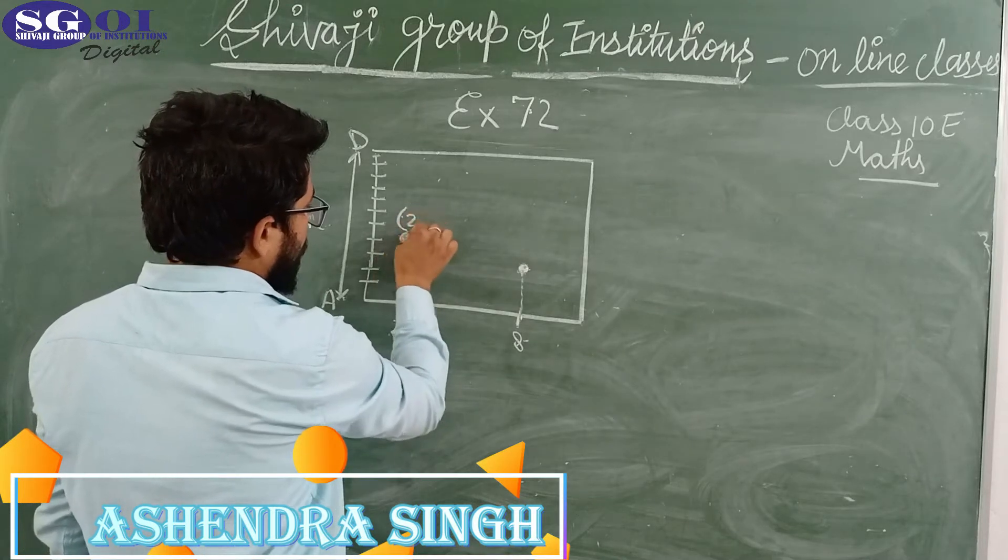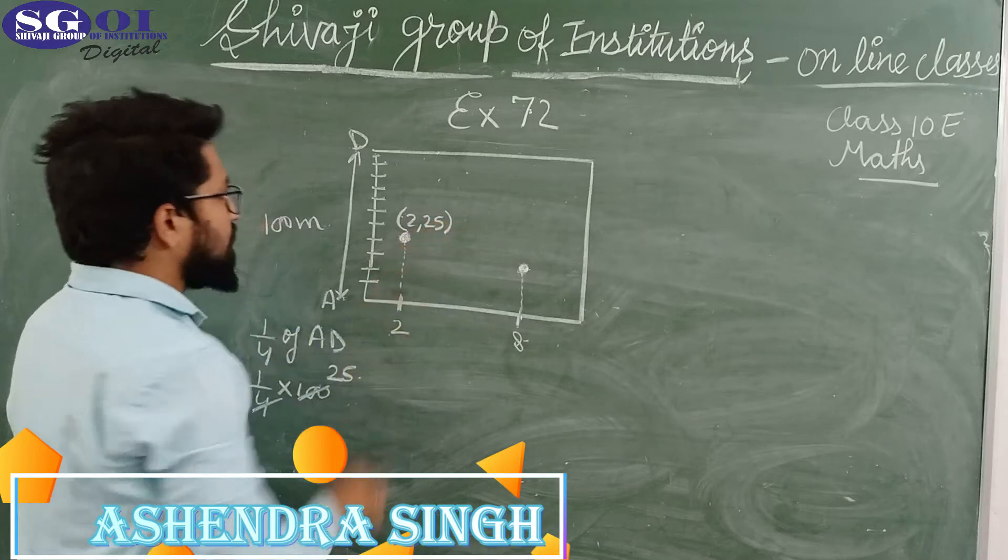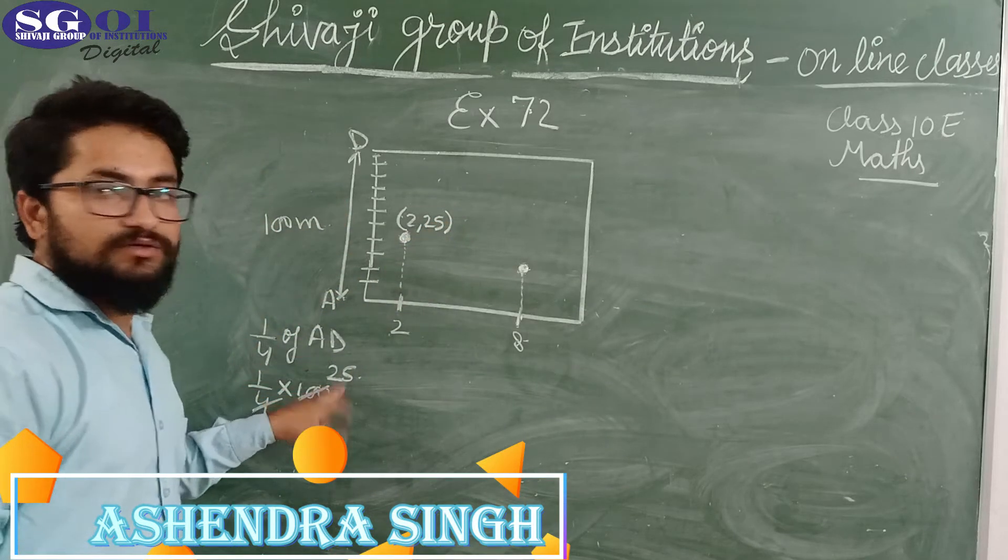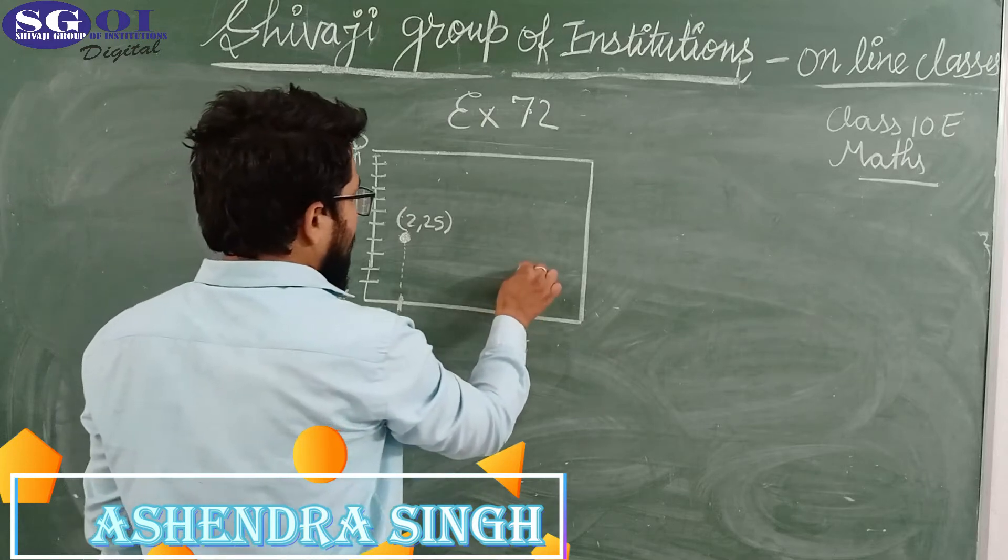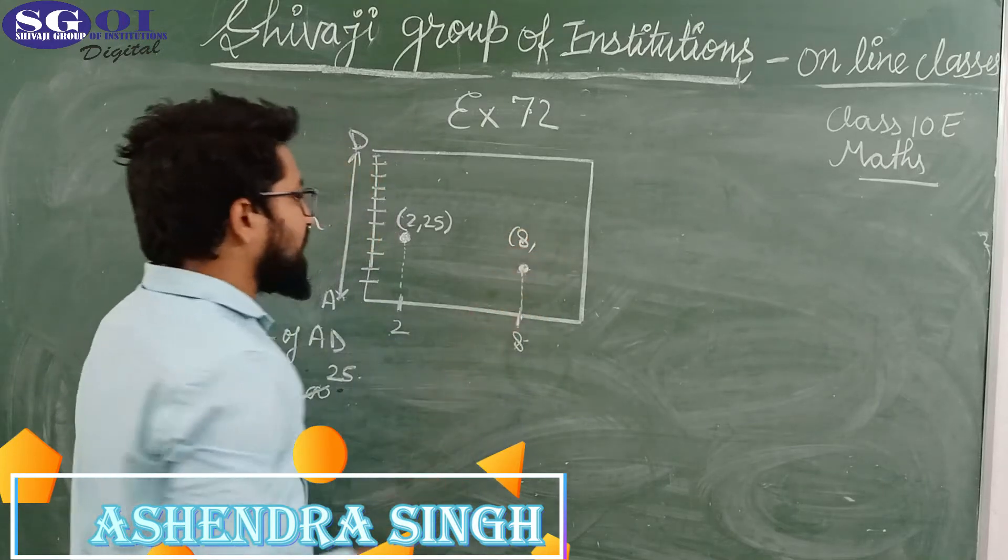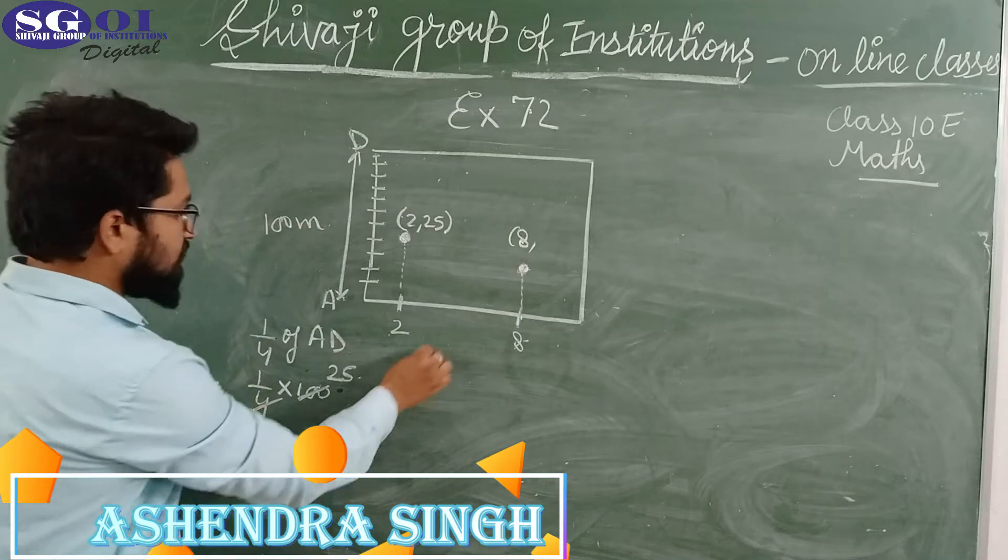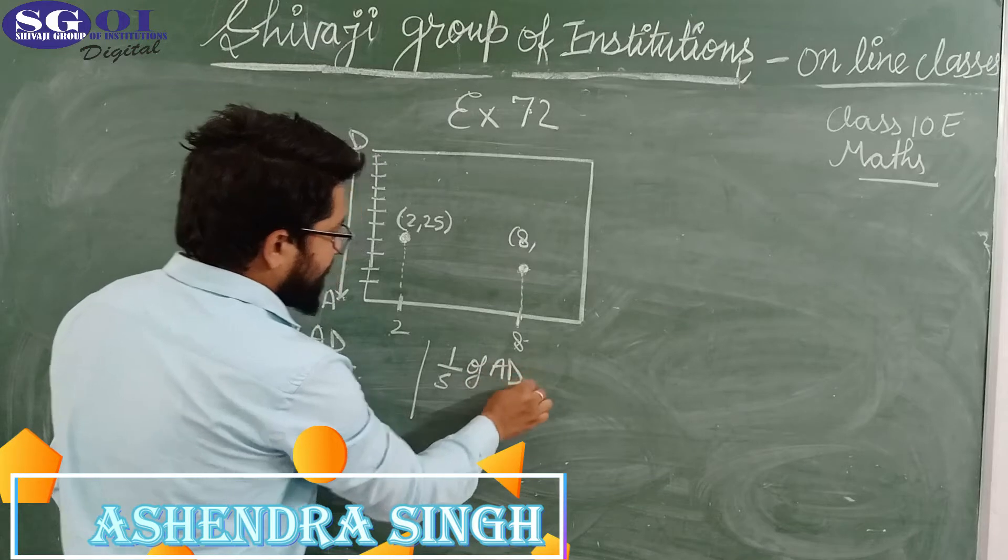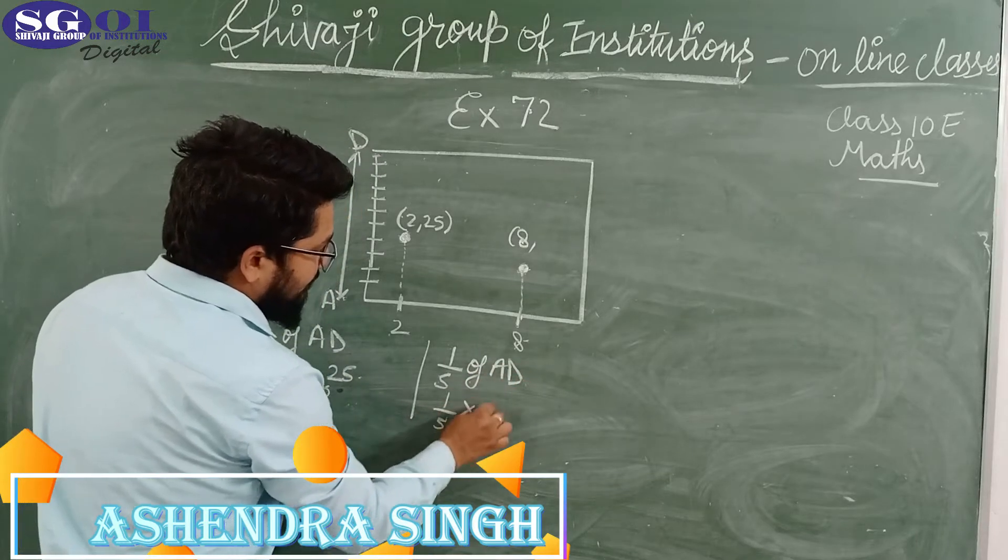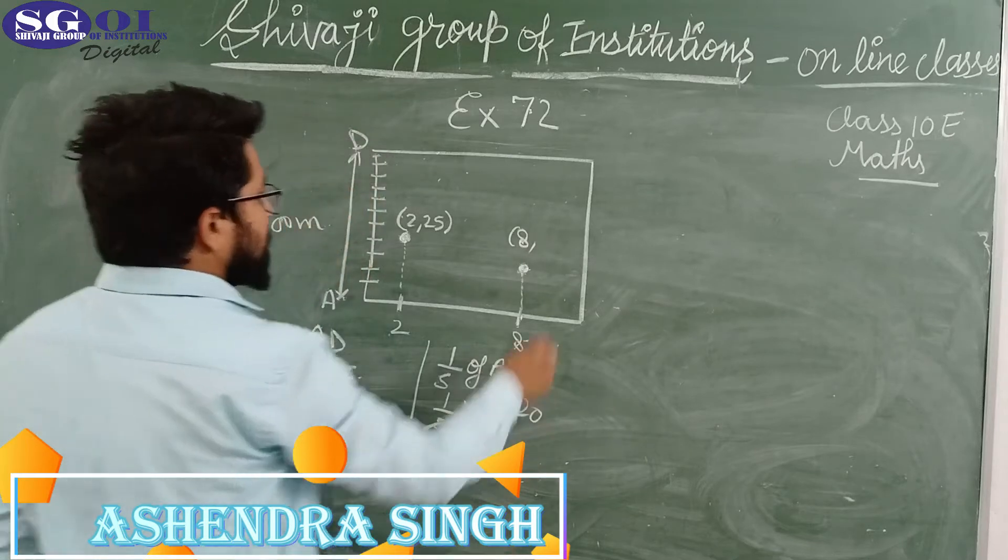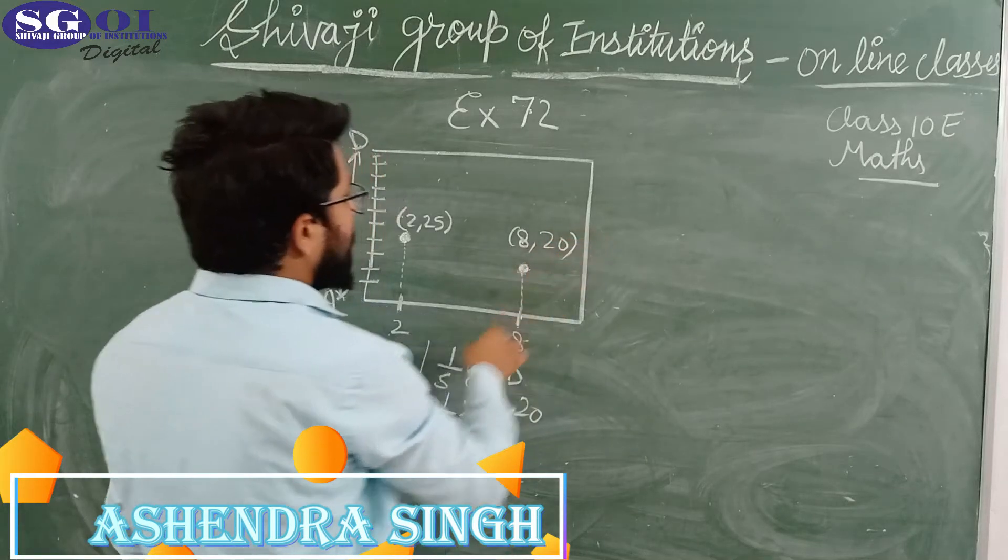And the x-coordinate? This is 1 upon 4th of AD, that is 25 meters. Similarly, the x-coordinate is 8, and y-coordinate is 1 upon 5 of AD distance covered. This will be 1 upon 5 multiplied by 100, that will give us 20. So the coordinate is (8, 20).